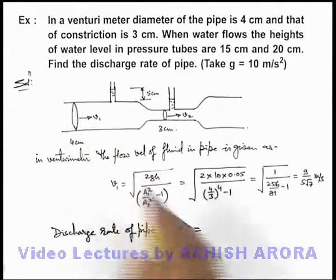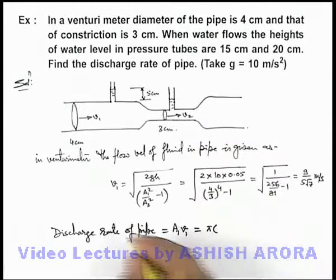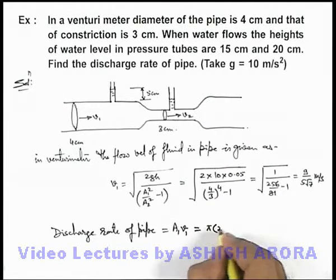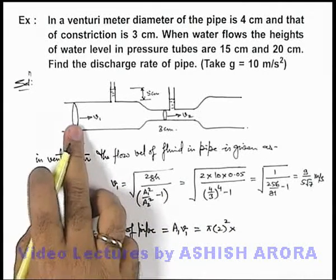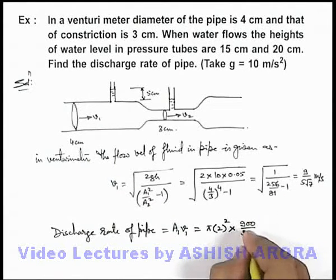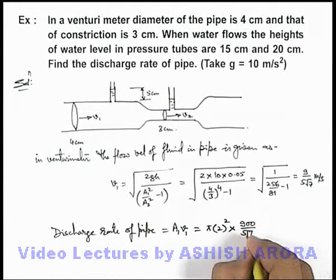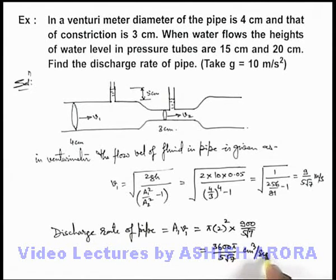And the area of the pipe can be given as pi r square. The radius is 2 centimeter. So I can just calculate it in centimeters per second. So it is pi multiplied by 2 square multiplied by the speed of water flow in centimeter per second. If I'll take this, will be 900 by 5 root 7 centimeters per second. So on calculation, this will give us 3600 pi by 5 root 7 centimeter cube per second. That will be the discharge rate and answer to this problem. If we require, we can further numerically simplify.